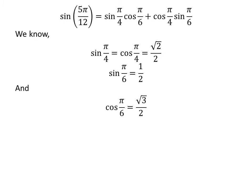We know sine of pi upon 4 is equal to square root of 2 upon 2, and cosine of pi upon 4 is also equal to square root of 2 upon 2. We also know the value of sine of pi upon 6 is equal to one half, and cosine of pi upon 6 is equal to square root of 3 upon 2.